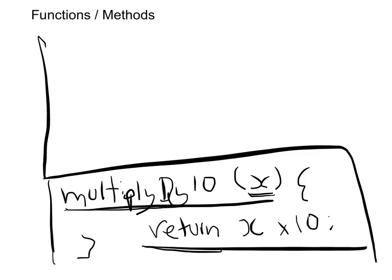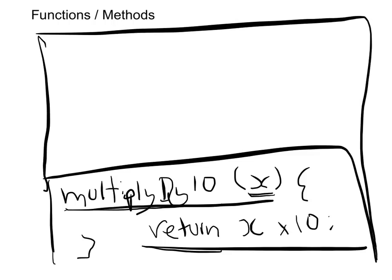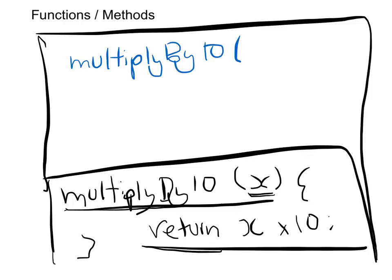This is my function, part of my program. But I haven't used this function yet — so if I run this program, nothing would happen, because I haven't called it. In programming, 'calling' a function means using it. To call the function, all I have to do is type the name — 'multiplyByTen' — and then give the number I want to multiply by 10, which I'll say is 9.